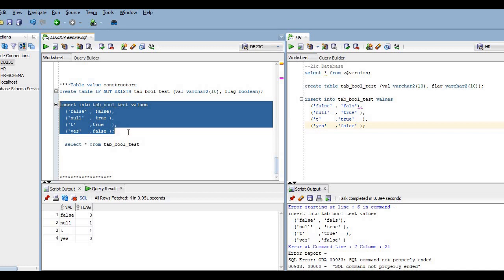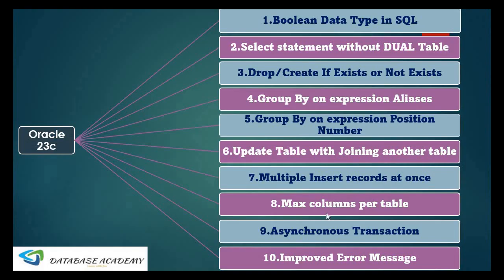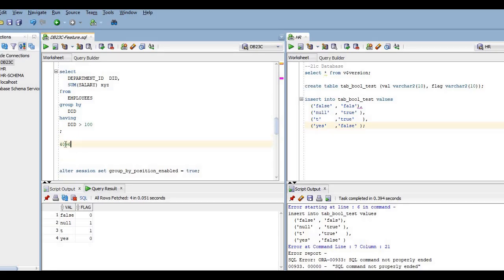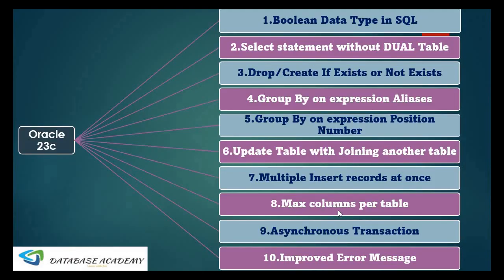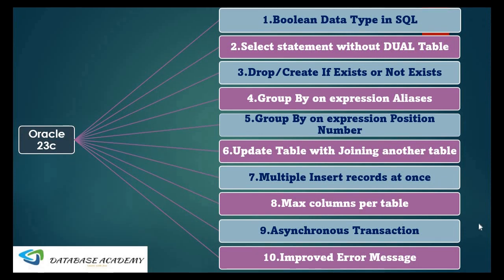The next feature is the increased maximum columns per table. From 23c onwards, you can create up to 4096 columns for a single table. This is an extension of the column limit, and that feature has been added in 23c.